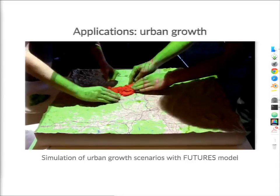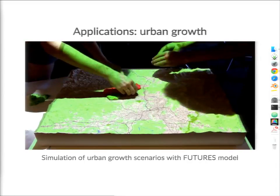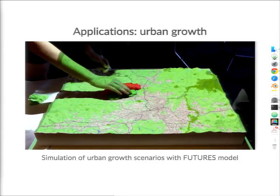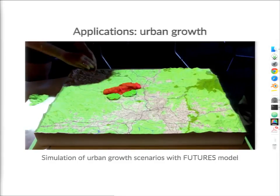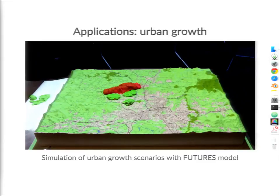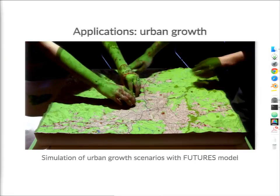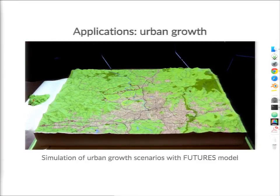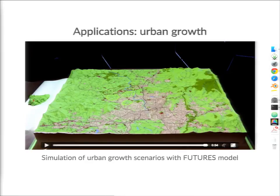This is a much more complex model where we coupled Tangible Landscape with an urban growth model called Futures, developed at NC State. Here we interact by placing different colored sand to create zones: the red zone supports more development while the green zone is for conservation. We re-run the model with these new initial conditions and you can see much more development in that zone. This type of environment can be used for engaging stakeholders as a decision-making tool.